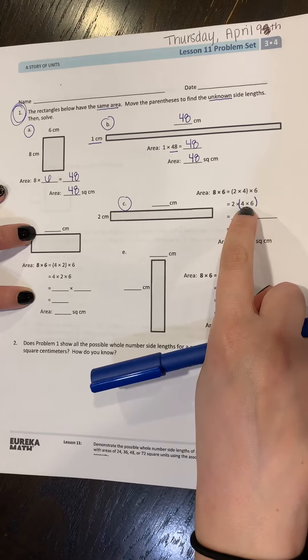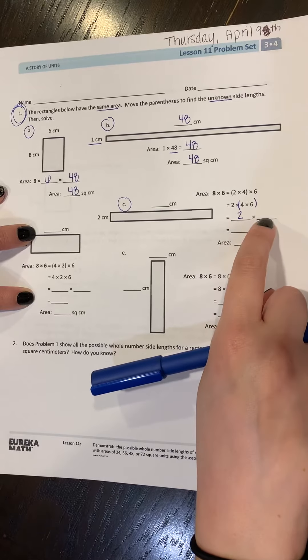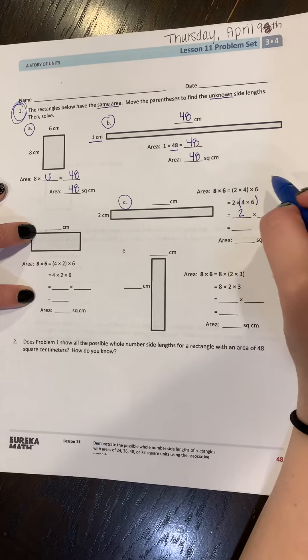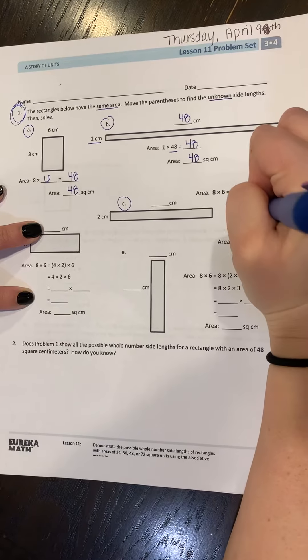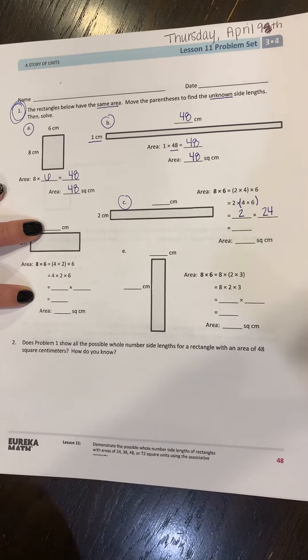So my first blank, I'm just going to drop my two down. And my second blank, I'm going to solve for four times six. And I know that six times four is 24. So I can write that in here.